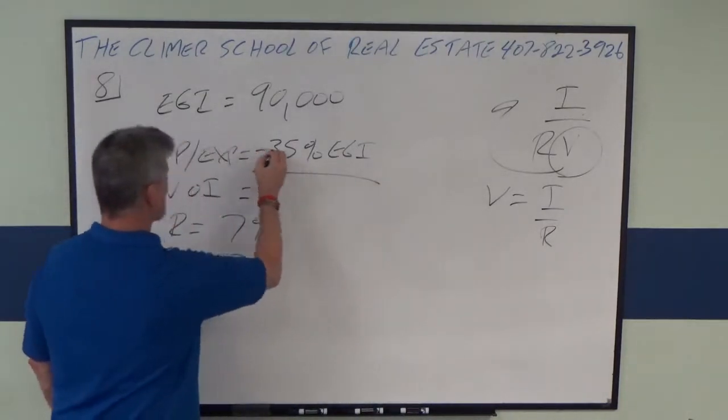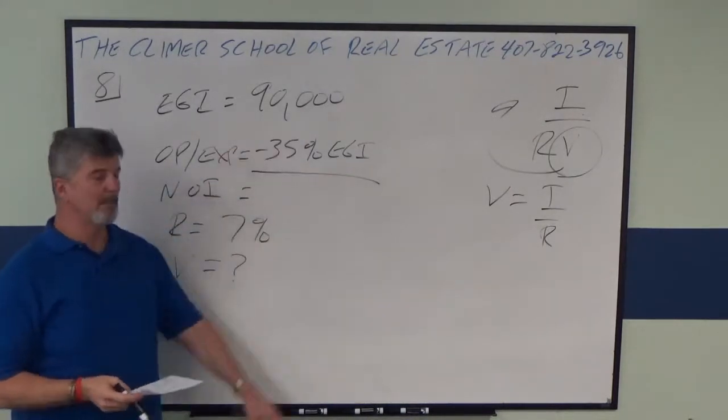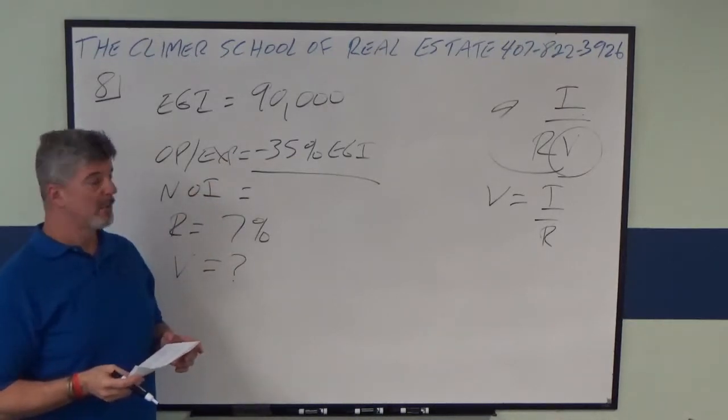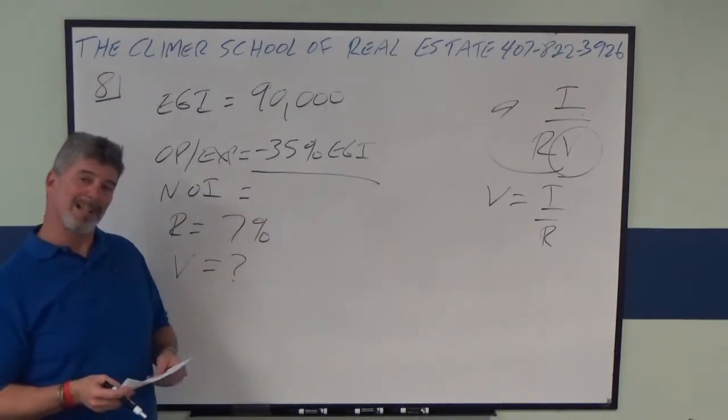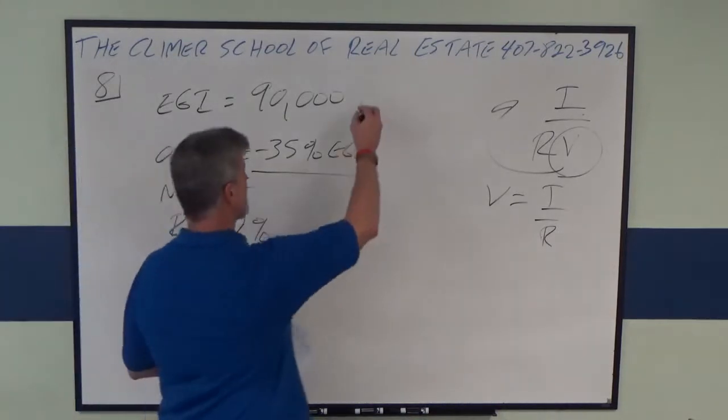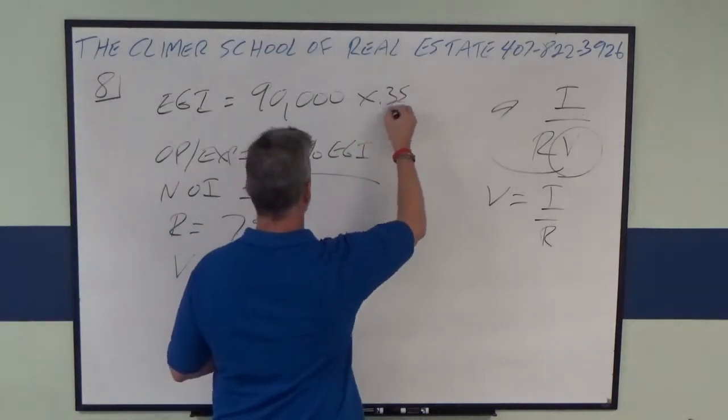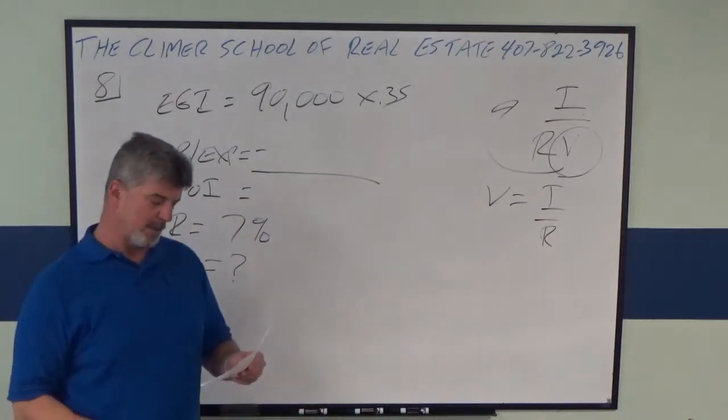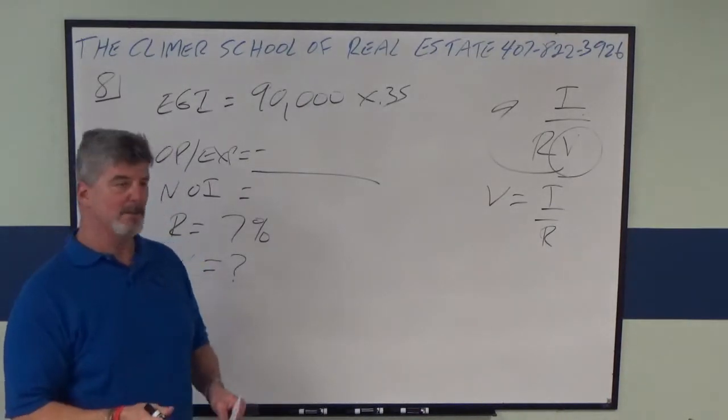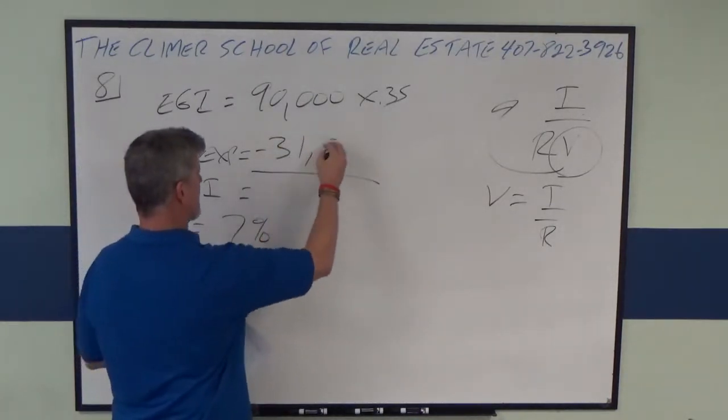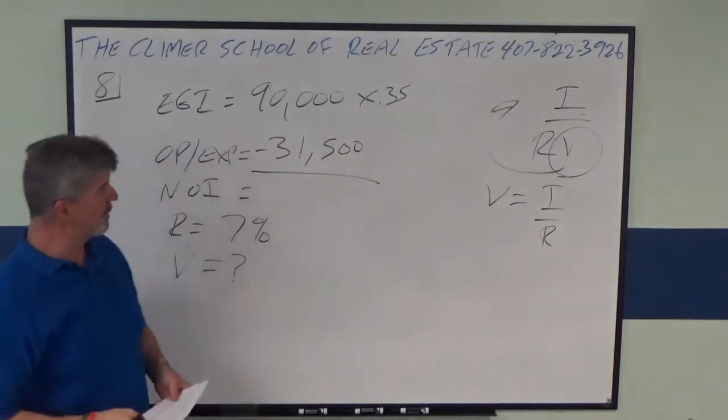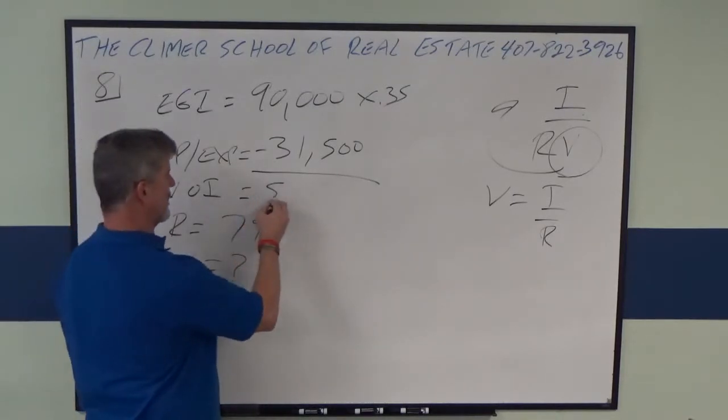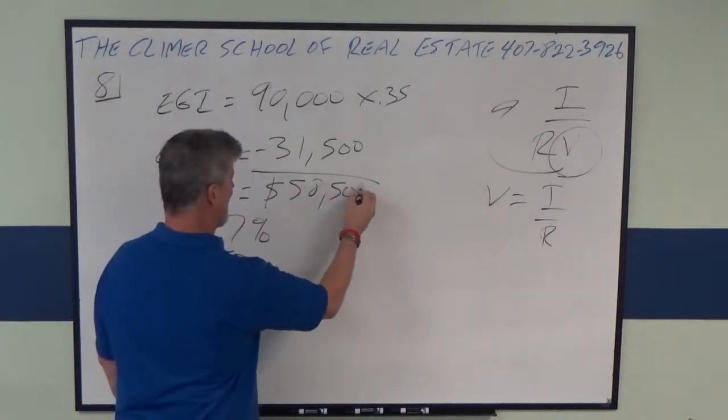And NOI is effective gross income minus operating expenses. All we got to do now is multiply 90,000 times 35%. And that number is, according to my notes, $31,500. Now, the hard part is, what is 90,000 minus $31,500? So NOI is $58,500.